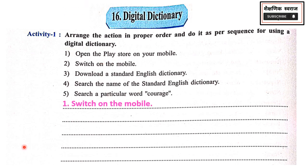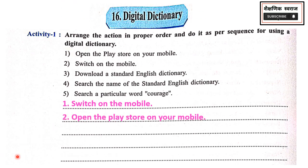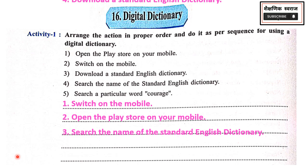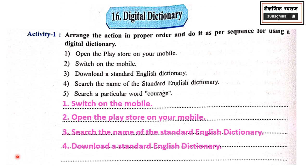First, switch on the mobile. Open the Play Store on your mobile. Search the name of the Standard English Dictionary. Fourth, download a Standard English Dictionary. And last, search a particular word — Courage.